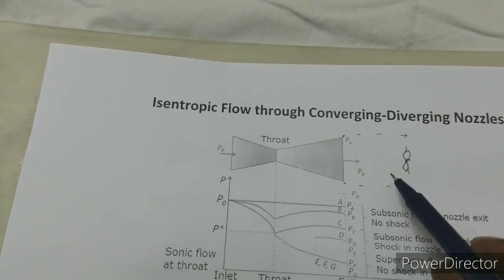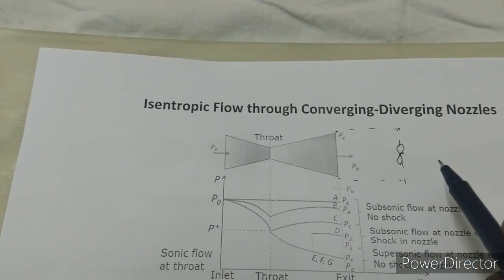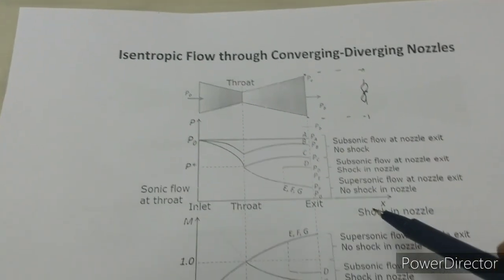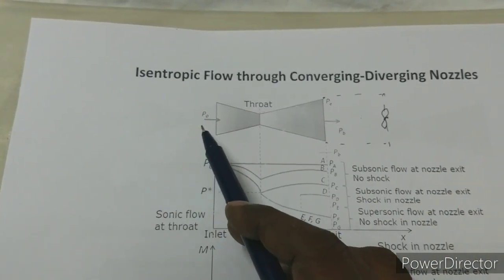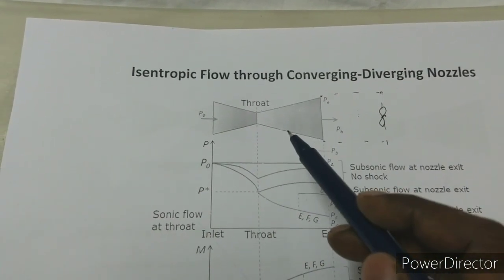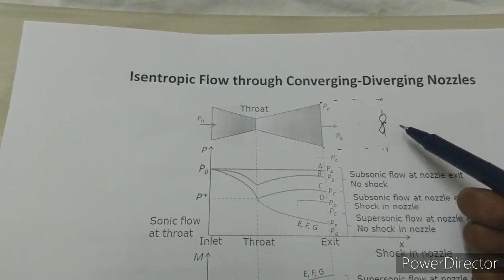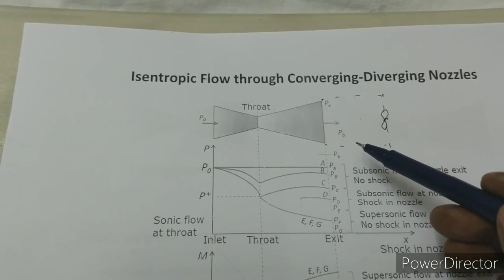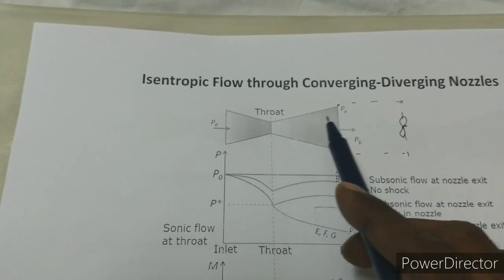By varying this back pressure, we are going to see how the flow changes happening in the convergent-divergent section. We have different cases to explain. The first case: when the back pressure Pb and the inlet P0 are the same, obviously there is no pressure difference and there won't be any flow through this nozzle. If you gradually start opening this valve, the back pressure will be dropping. With the decreasing back pressure, when there is a pressure difference, a flow starts moving through the convergent section followed by the divergent section.